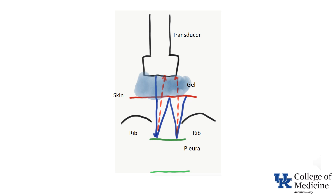Disclaimer: I am not an artist. This illustration attempts to show the transducer, skin, gel, ribs, and pleura, all of which are labeled. A-lines are a classic example of reverberation artifact. In this sequence, the transmitted beam (blue) strikes the pleura (green) and is reflected to the transducer (red dotted line), which generates the image of the actual pleura as a hyperechoic line.